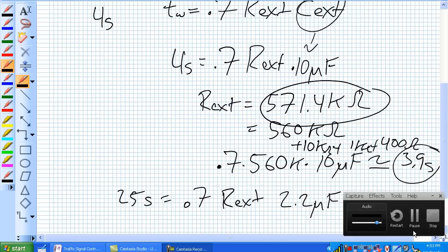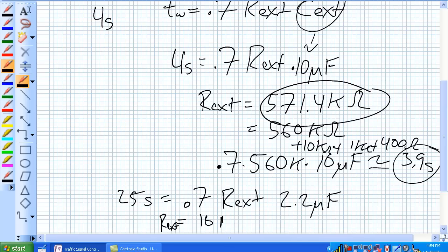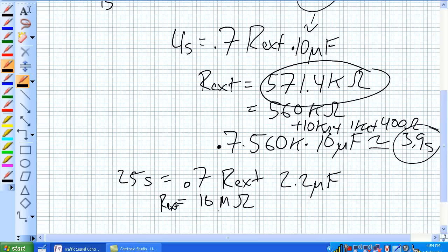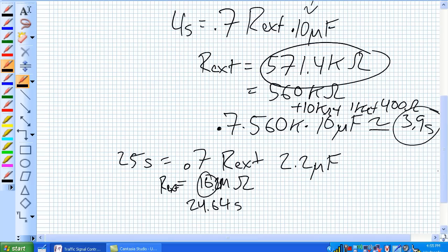Doing the same thing for a 25-second timer, again, 0.7 R external times, I'm going to say 2.2 microfarads. Let's do the math and figure out how close of R external do we need to get. Your R external should be on something of the order of 16 mega-ohms, 16.23 mega-ohms. There really is no such thing as a 16.23 mega-ohm resistor, but there is a 16 mega-ohm resistor. It's 24.64 seconds, so that's close enough, 25 seconds.